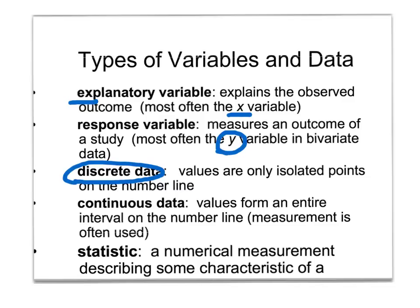Continuous data are values that form an interval. Most often this involves measurement, and in science experiments it's commonly time — measuring a continuum from 0 to 30 seconds, where you want to know what's happening at 24.5 seconds or 30.2 seconds. Decimals make sense, so that would be continuous data. You usually connect the points on a graph; with discrete data, you would not connect the points because decimals don't make sense.